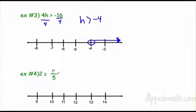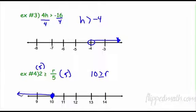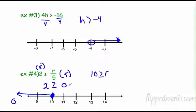Down here, the opposite of dividing by 5 is to multiply both sides by 5. 2 times 5 is 10, so 10 is greater than or equal to R. It could be equal to it, so I shade a solid dot. I want all numbers less than 10, going this way. Let's check with 0: 0 divided by 5 is 0. Is 2 greater than or equal to 0? Yes, it works out.